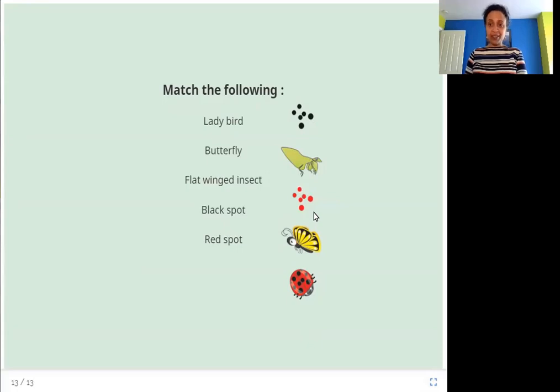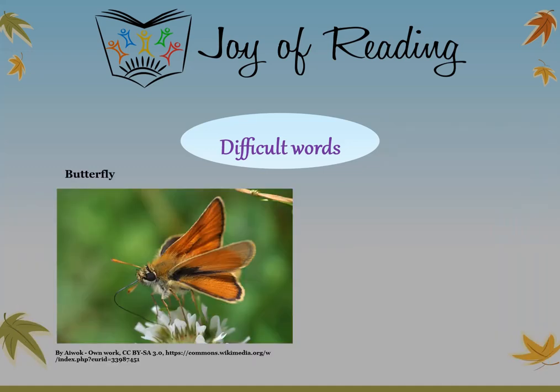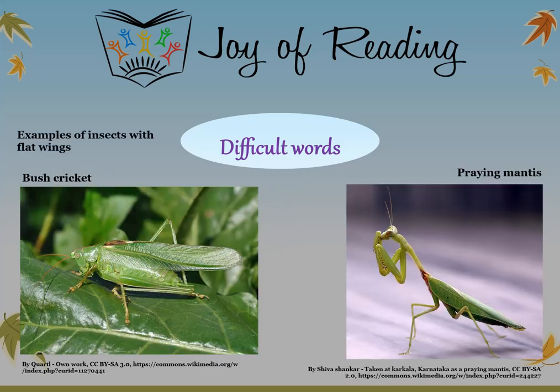I hope you enjoyed this story. Thank you. The difficult words in this story are: Lady bird — a type of insect with a red body with black spots and round wings. Butterfly — a type of insect with large wings and a long body. Here are some examples of insects with flat wings: bush cricket, praying mantis.